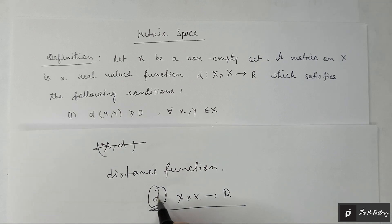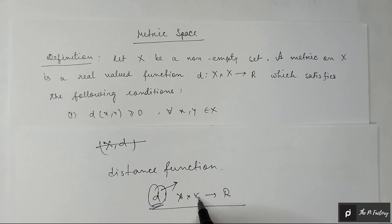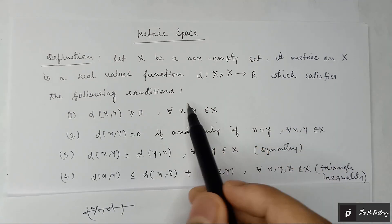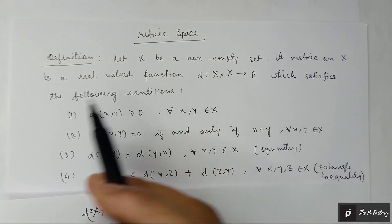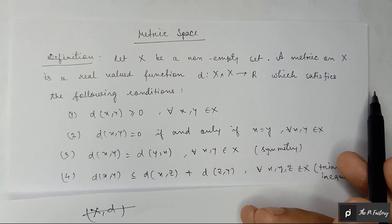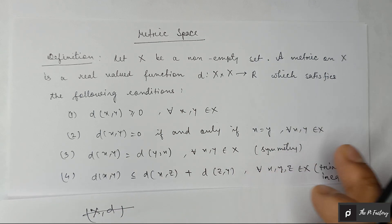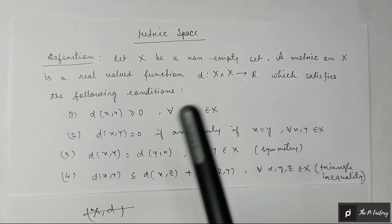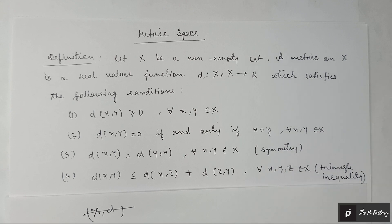d is the distance function from X cross X to R. Let X be a non-empty set. A metric on X is a real-valued function d from X cross X to R which satisfies the following conditions. When it satisfies these conditions, we will say that (X, d) is a metric space.